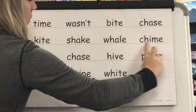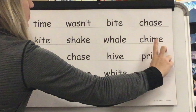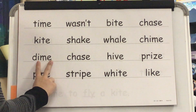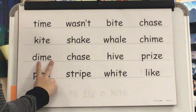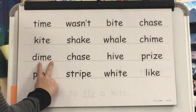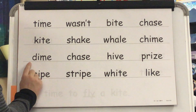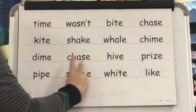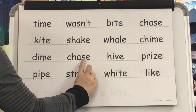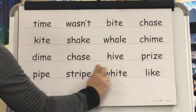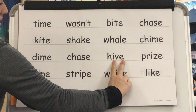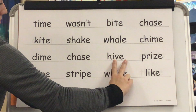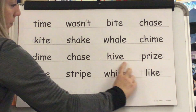Sound: I. Blend: Ch. I'm. Word? Chime. Sound: I. Blend: D. I'm. Word? Dime. Sound: A. Blend: Ch. A. S. Word? Chase. Sound: I. Blend: H. I've. Word? Hive.